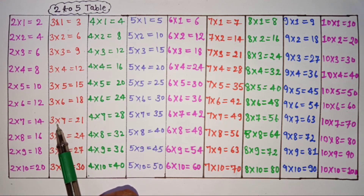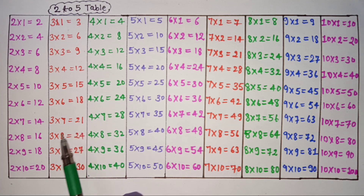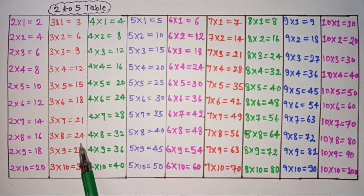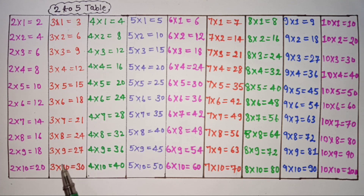3 7's are 21, 3 8's are 24, 3 9's are 27, 3 10's are 30.